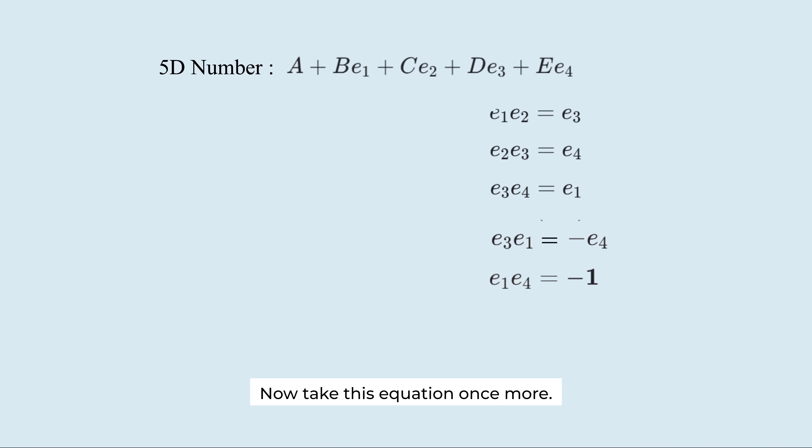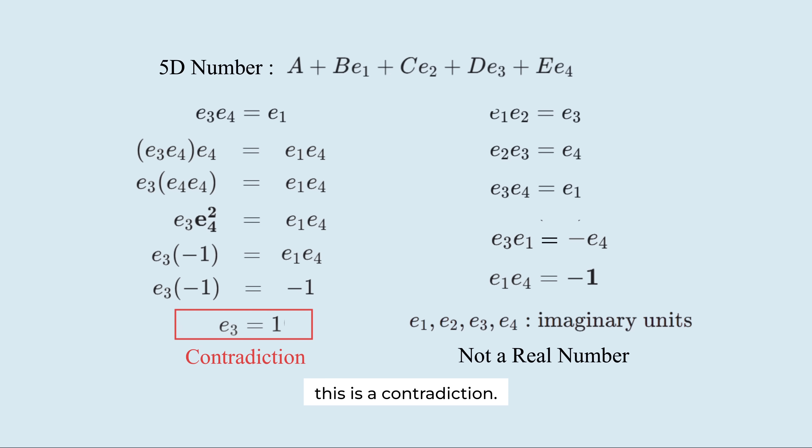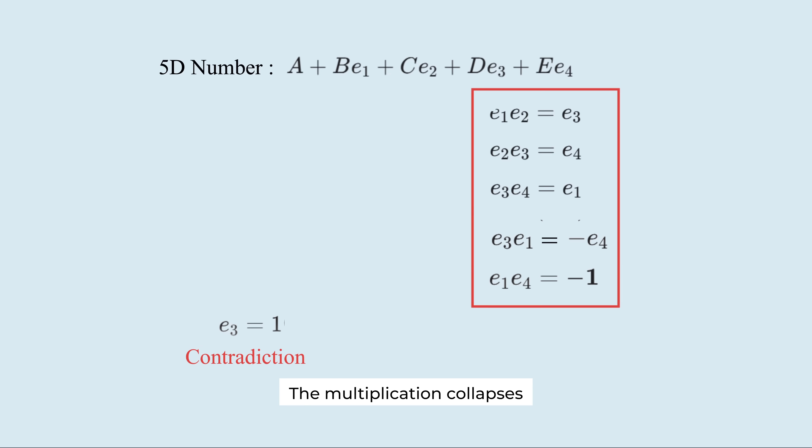Now, take this equation once more. Multiply both sides by E4. E3 times minus 1 equals E1 times E4. But we already showed that E1 times E4 equals minus 1. Therefore, E3 equals 1. Since E3 is supposed to be an imaginary unit, not a real number, this is a contradiction. The multiplication collapses into inconsistency.